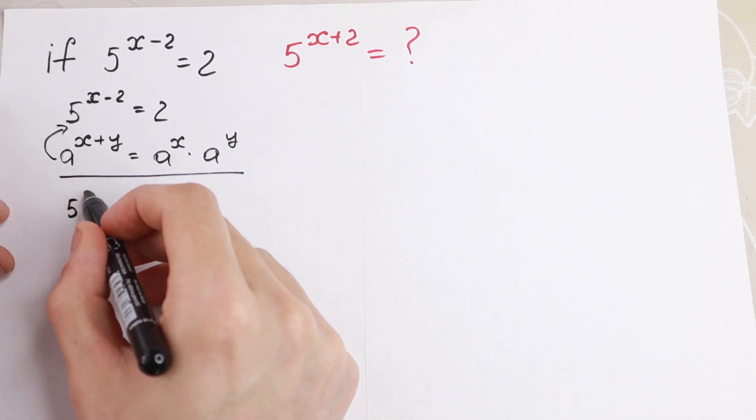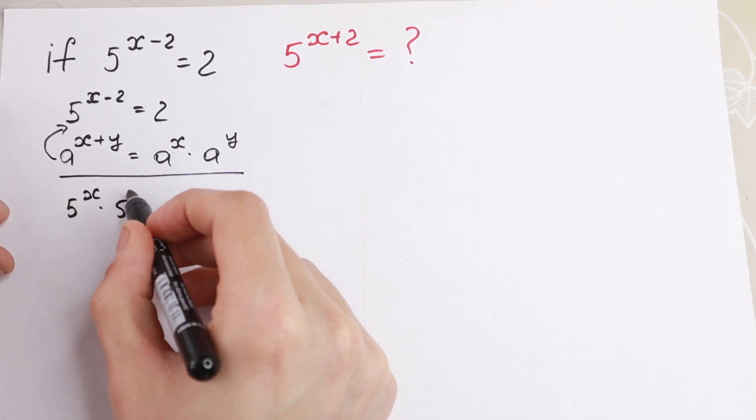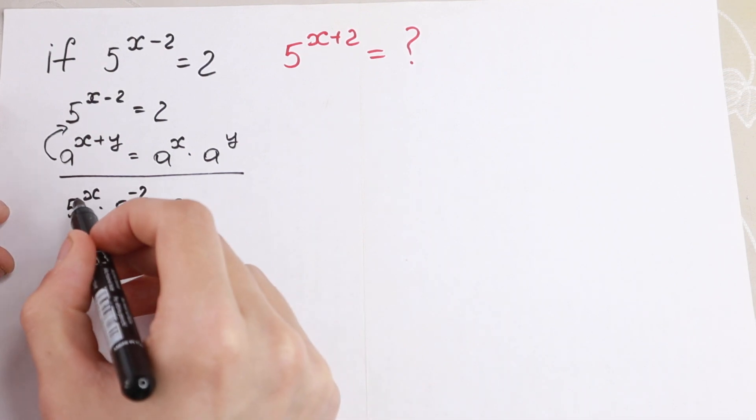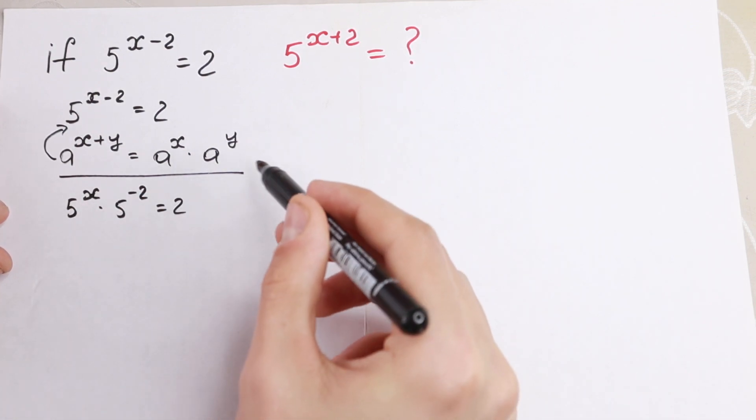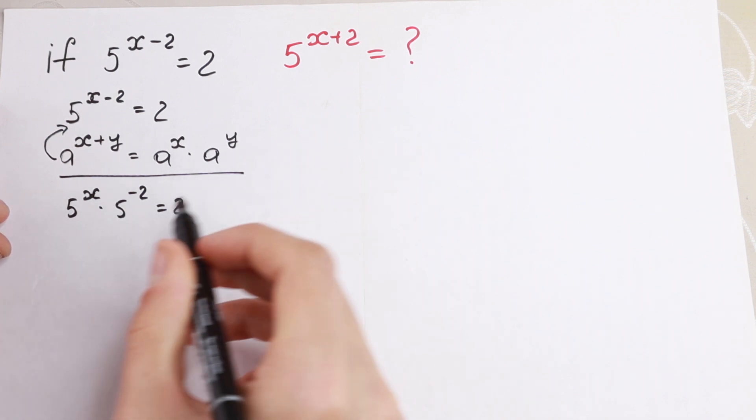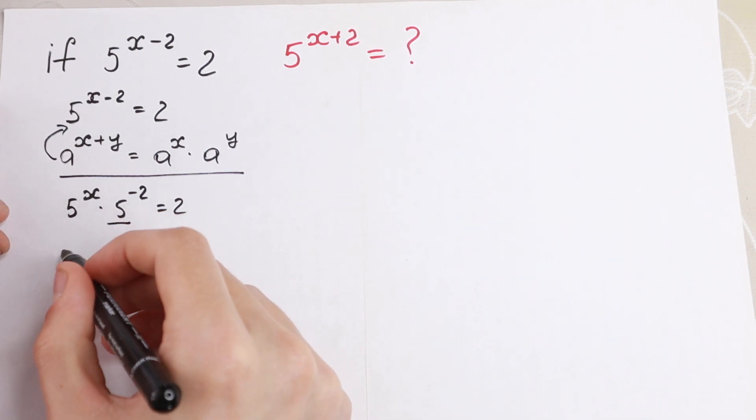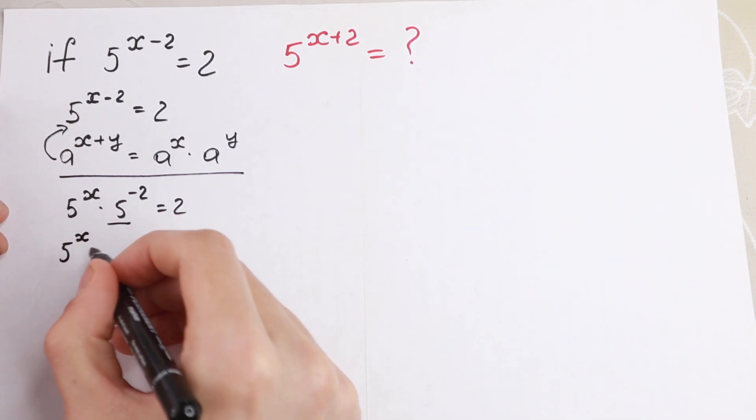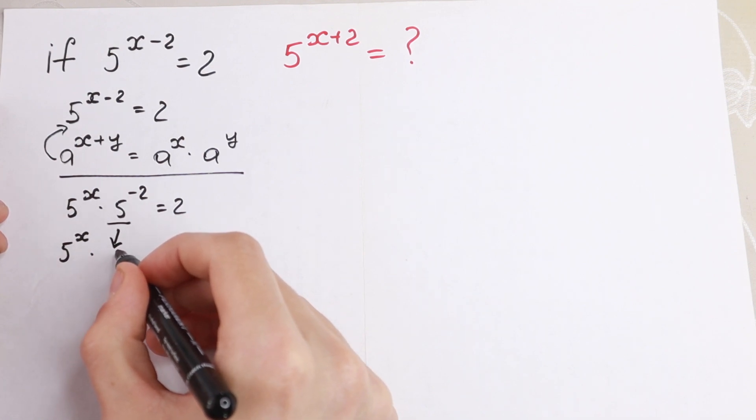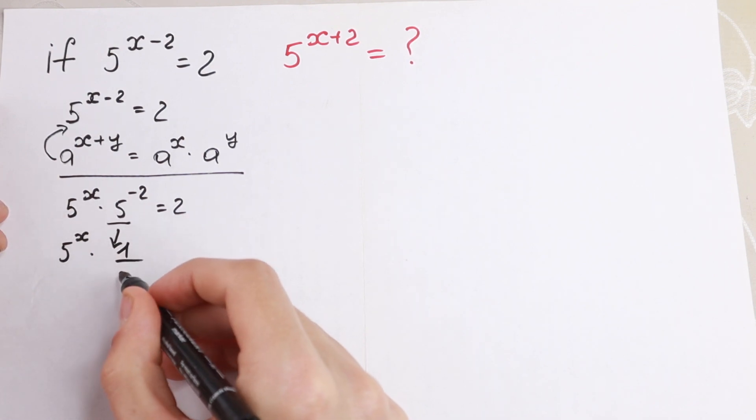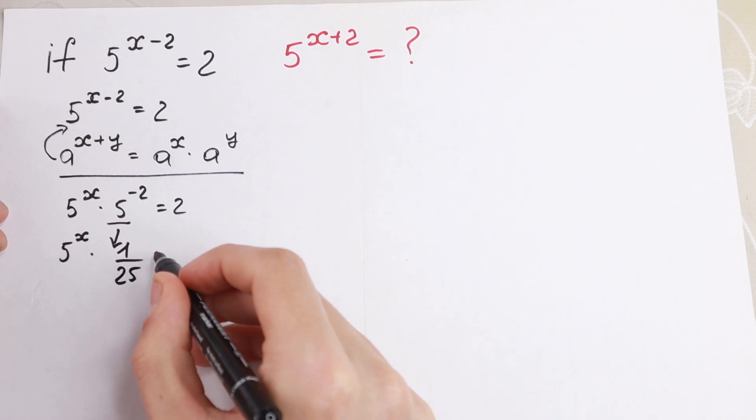From here, 5 to the power x times 5 to the power minus 2 equals 2 using this rule. And 5 to the power minus 2 equals 1 over 5 squared which is equal to 1 over 25 equals 2.